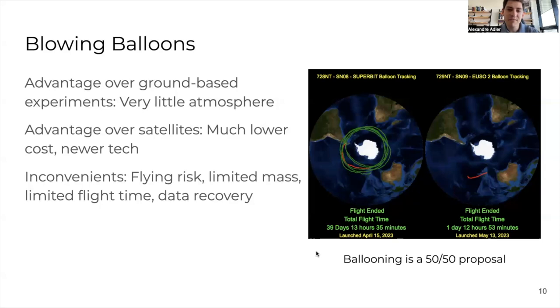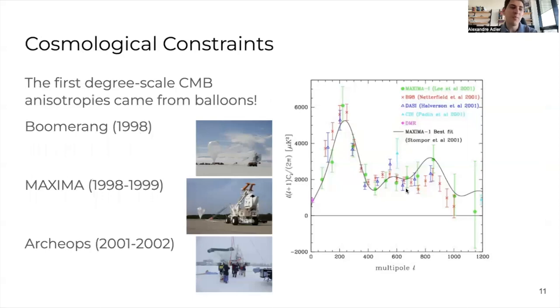You have a balloon flight that happened this year called SuperBIT, which managed to circumnavigate the southwest hemisphere five or six times, fly for 40 days. And on the right, you have EUSO, which was launched just a month later and met an unfortunate demise in the Pacific Ocean within 36 hours of launch. So really, ballooning always comes with risks. Sometimes your telescope doesn't work when you launch them, sometimes the balloon doesn't work.